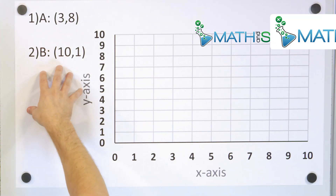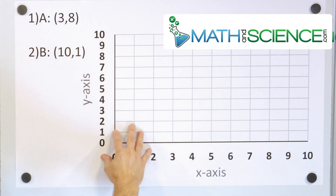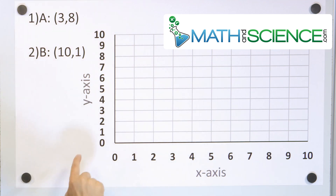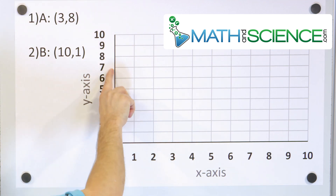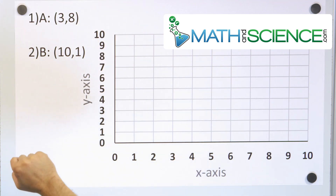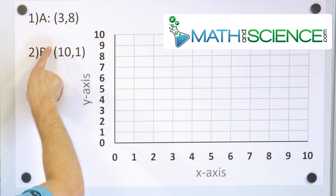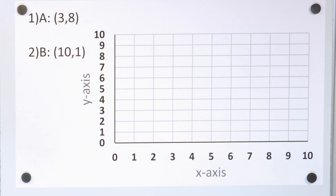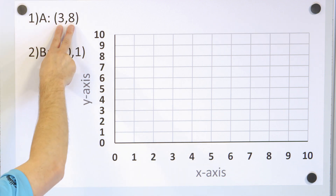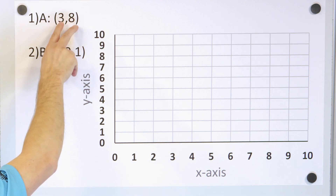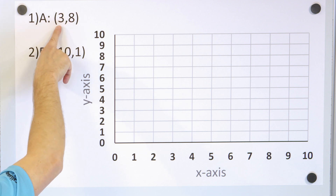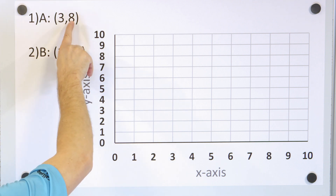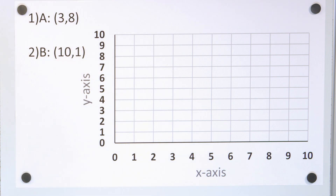Let's take a look at problem number one. Here we have our x-y plane. We have an x-axis going this way and a y-axis going this way. Here we have point A and point B, and we want to plot both of these points. As we said in the last lesson, the number before the comma is always x, and the number after the comma is always y.